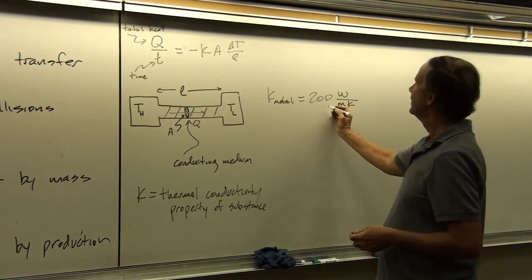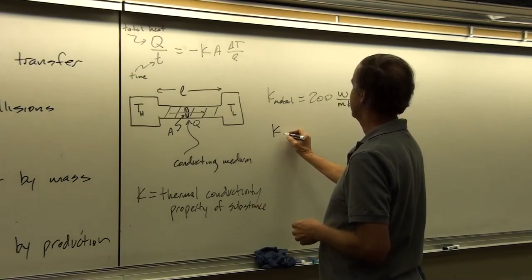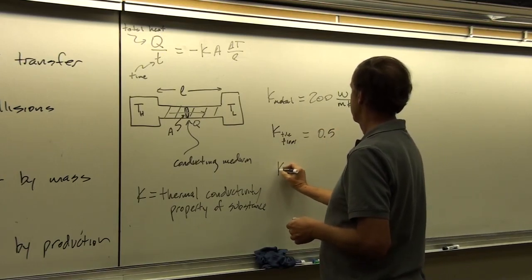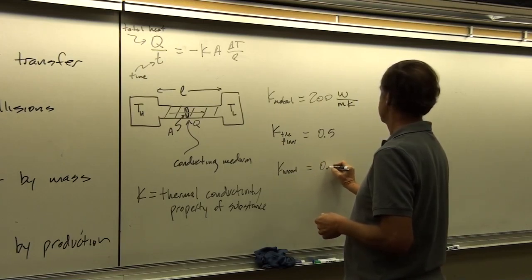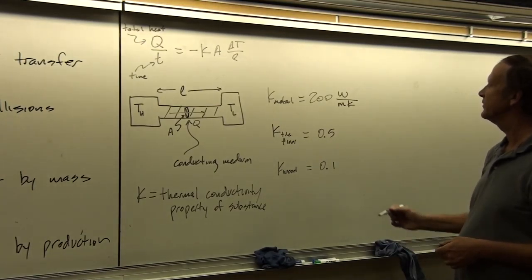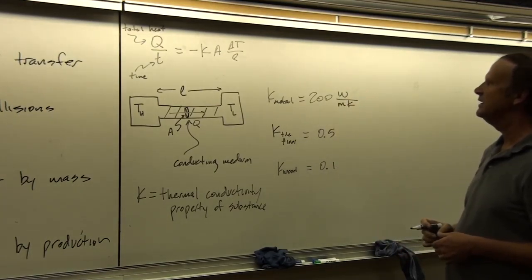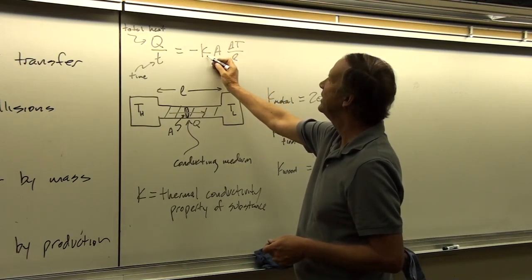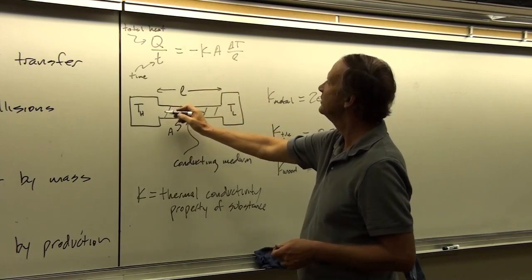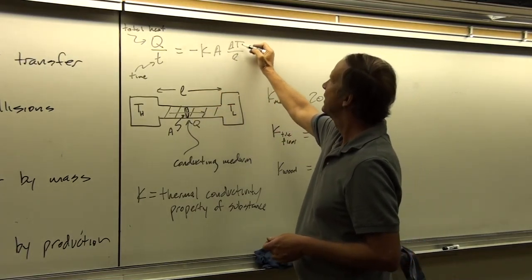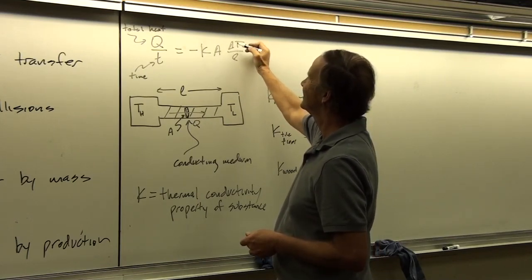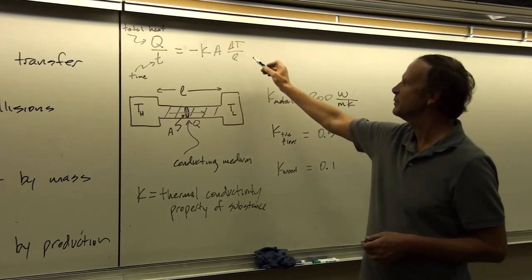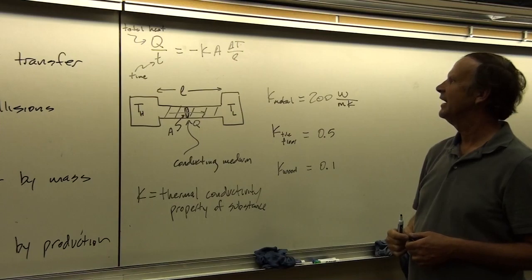The K value for a metal is on the order of hundreds — say 200 watts per meter·Kelvin. K for a tile floor might be about 0.5. Bigger values for K indicate faster rates of heat flow. This is the rate at which heat can flow, related to how easy it is for heat to flow, times the area it flows through — kind of like water flowing through a pipe. ΔT is analogous to pressure, and L is the distance heat must travel. So heat flow is inversely proportional to distance, but directly proportional to area and temperature difference.